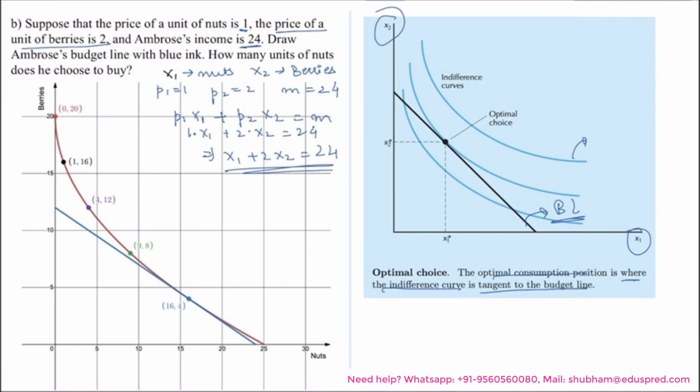At the optimal position, your budget line is tangent to your indifference curve. So that would be the point where a consumer would choose to consume. Now let's apply this concept to our question.